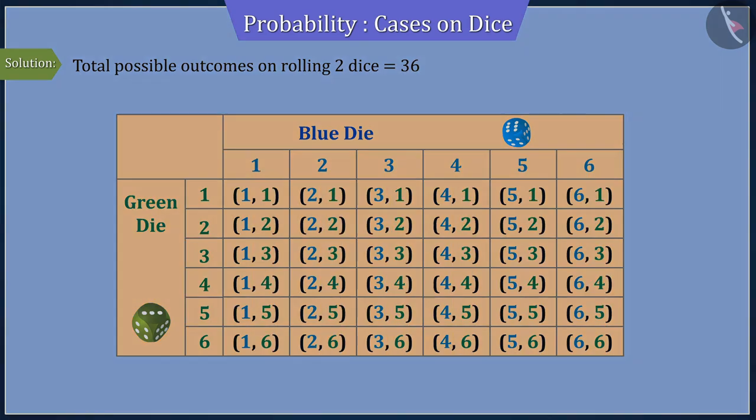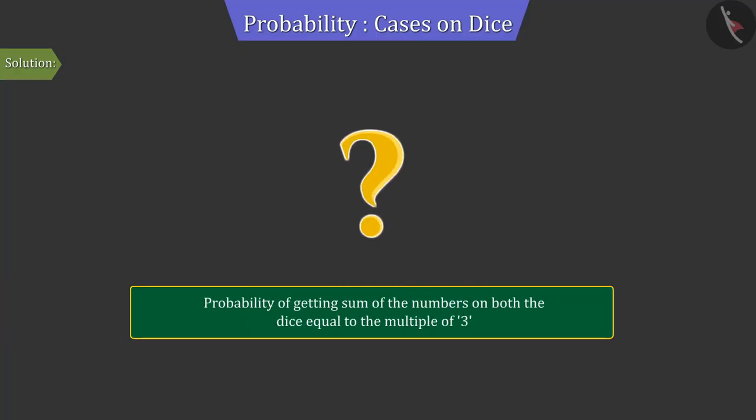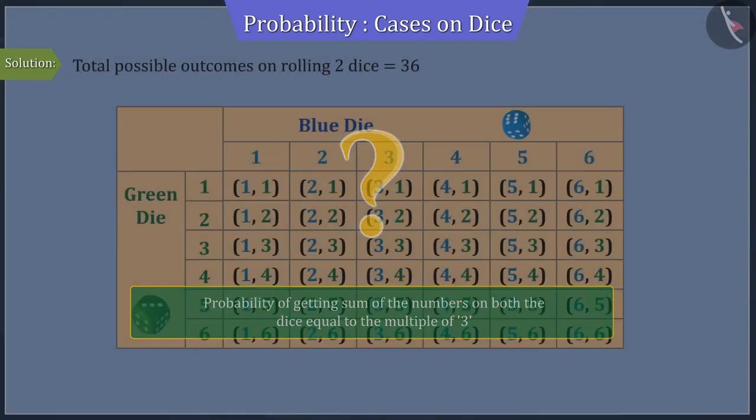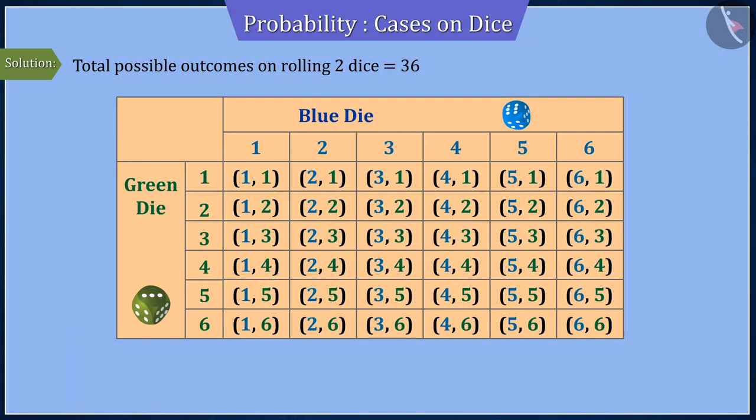Since we have to find the probability of getting sum of the numbers on both the dice equal to the multiple of 3, we select those ordered pairs whose sum of numbers is a multiple of 3.